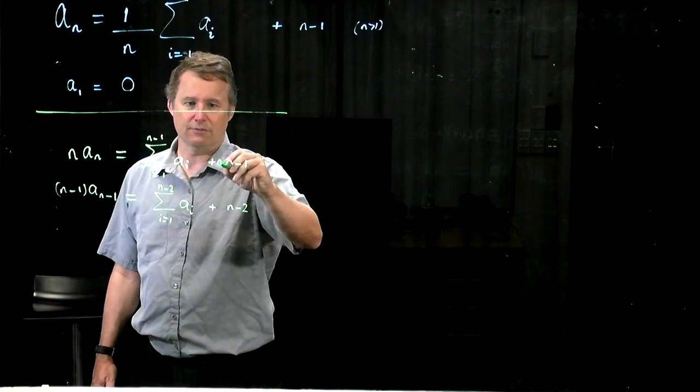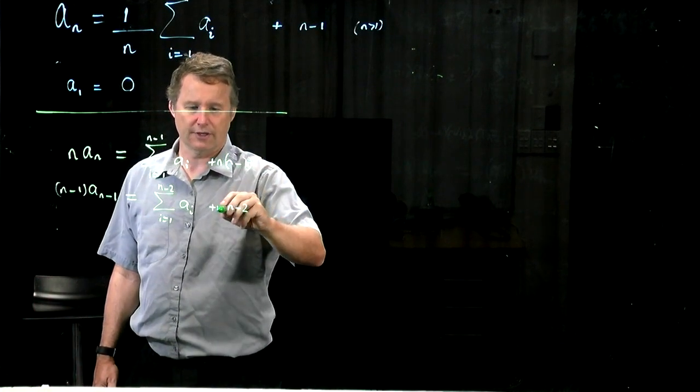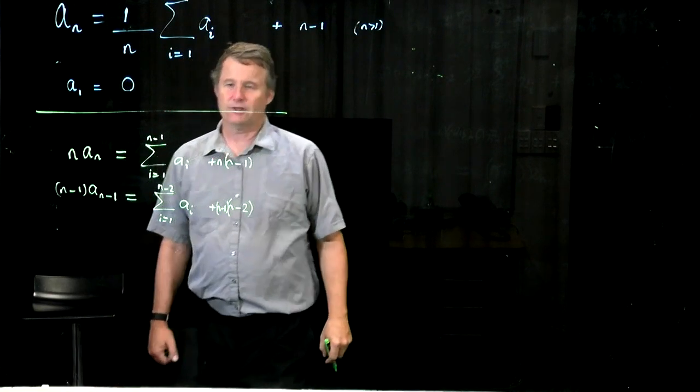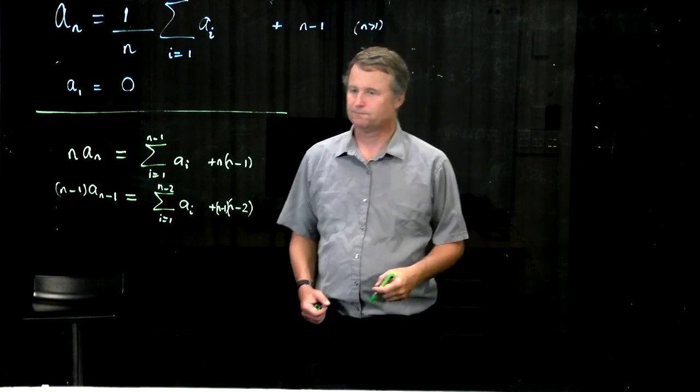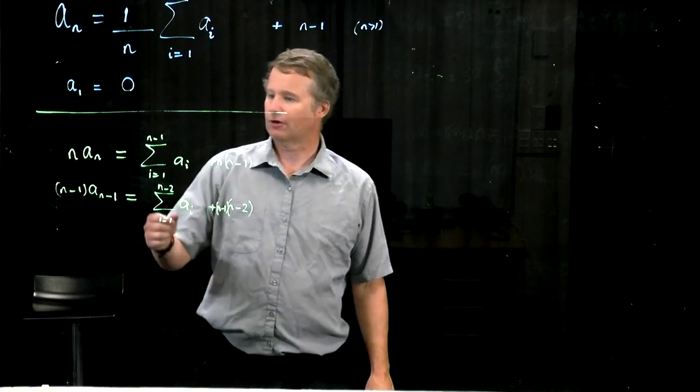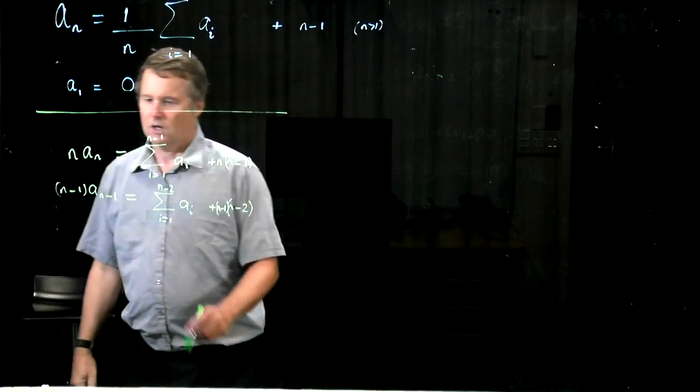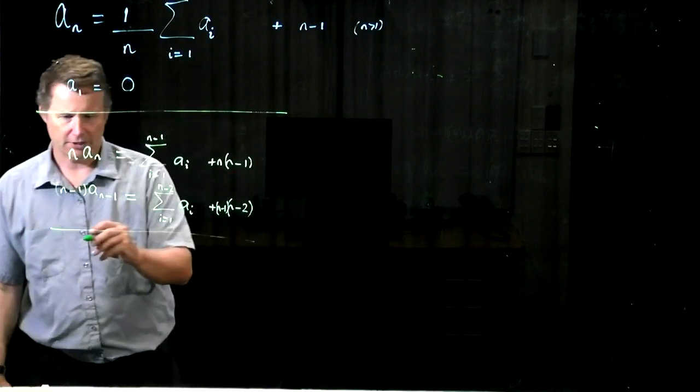We have an n times n minus 1, and here we have an n minus 1 times n minus 2. So everything analogous to the quicksort one, except we don't have a 2 in front of this sum. When we subtract, it makes quite a difference.